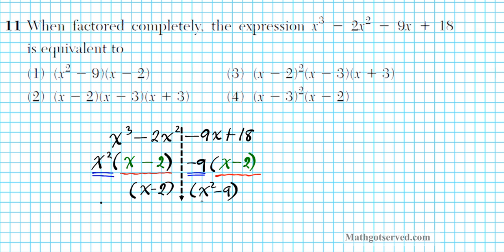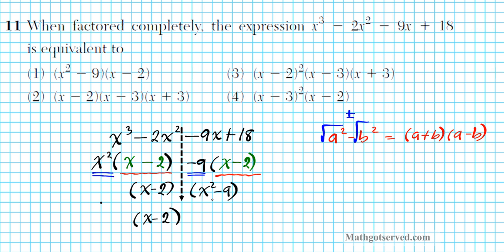Now we're going to factor further because we have a difference of squares. How do you factor a difference of squares? If you have a squared minus b squared, you simply root the first and the last term, and then express it as the sum and the difference of the square roots: a plus b times a minus b. x minus 2 is prime, it cannot be factored further. To factor x squared minus 9, we take the square root of x squared, which is x, giving us x minus 3 times x plus 3. Our correct answer is option number 2.